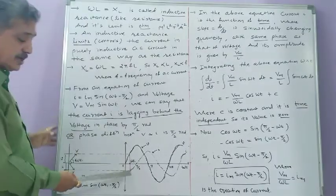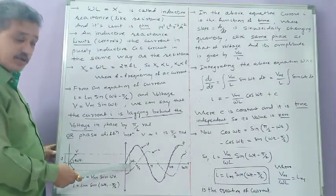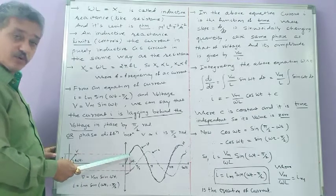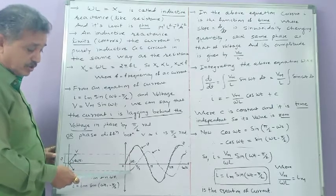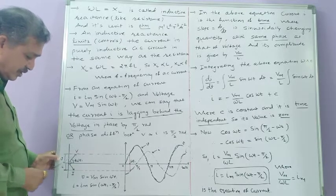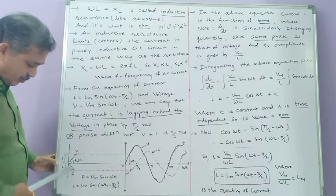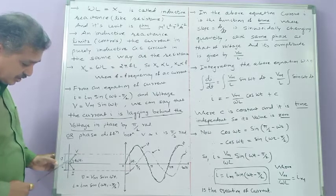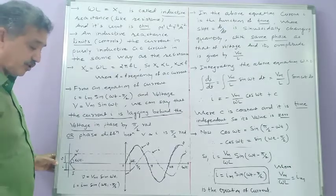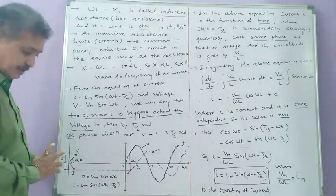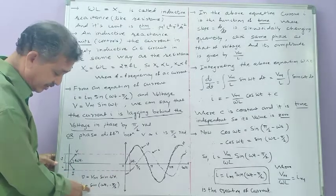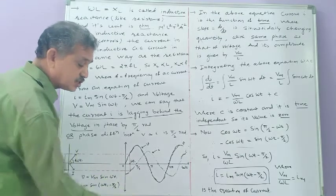At any time t1, the corresponding angle is ωt1. The phasor diagram of voltage and current for an inductive circuit shows: V = Vm sin(ωt1) and I = Im sin(ωt1 − π/2), confirming that the current phasor lags the voltage phasor by π/2.